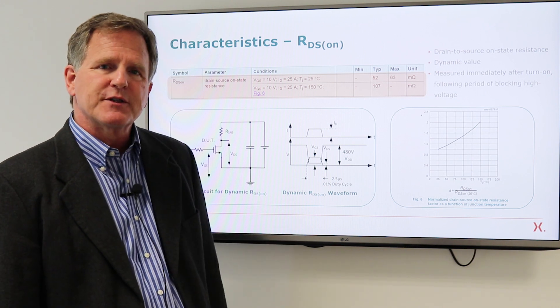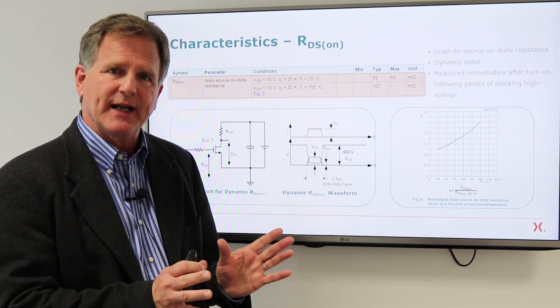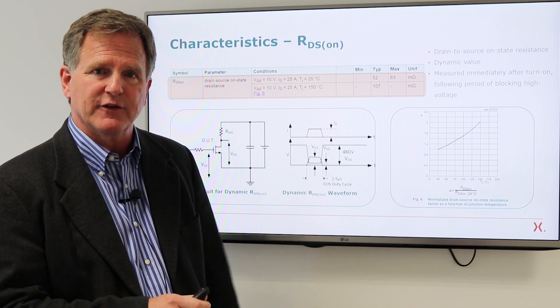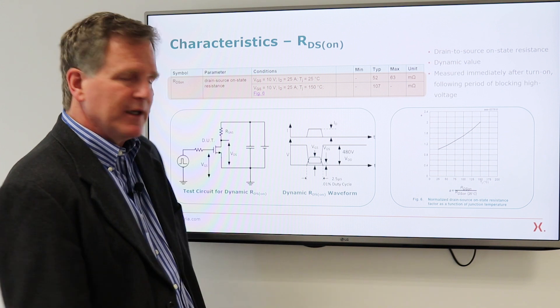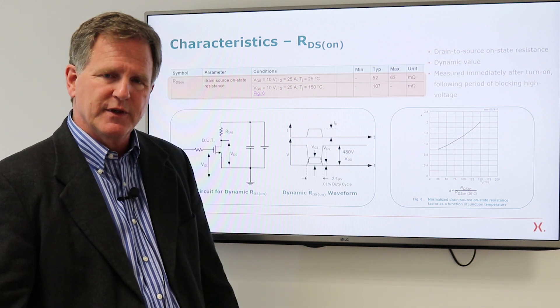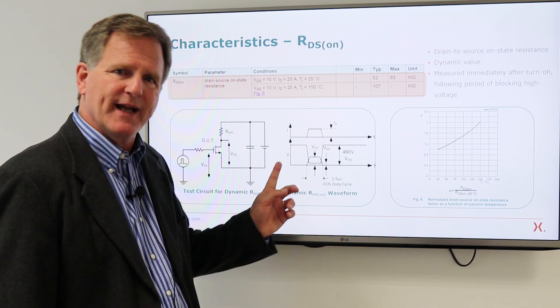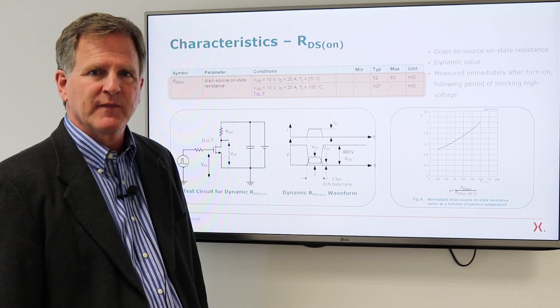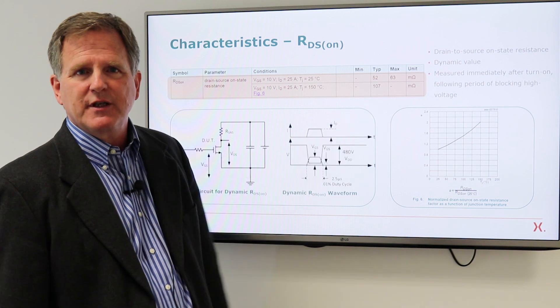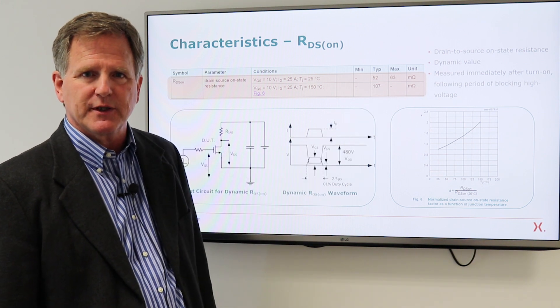Now there's a whole section of characteristics defining how the device operates in its intended operating conditions. On resistance. The on resistance is one which you would think is familiar, but actually for GAN, it's important to understand this as a dynamic variable. So this is the resistance you will achieve in your actual switching circuit.